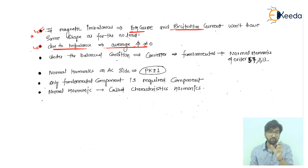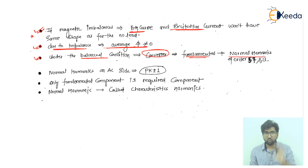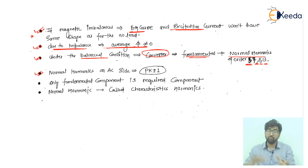Under balanced conditions, the converter will have the fundamental plus normal harmonics — specifically the 5th, 7th, 11th, 13th, and so on. On the AC side, these normal harmonics follow the relation PK ± 1, where P is the pulse number and K is an integer.